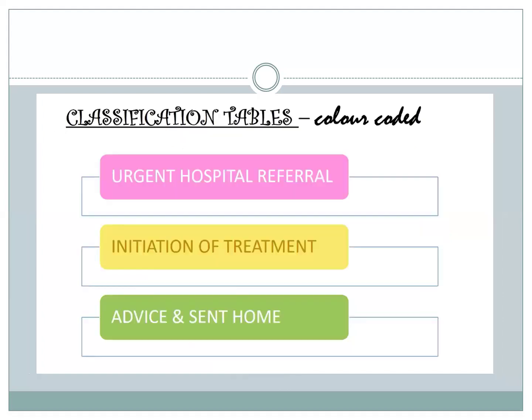There are three types of color-coded categories according to the severity of the disease. Pink indicates urgent hospital referral. Yellow indicates initiation of treatment at the OPD. Green indicates the child can be managed at home and does not require hospitalization or admission.